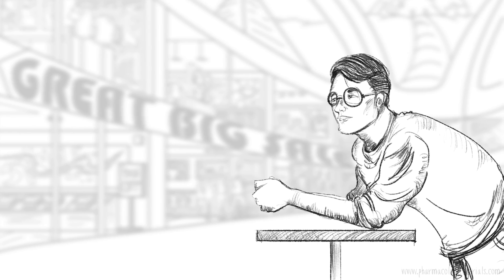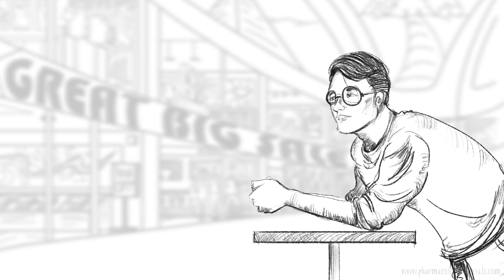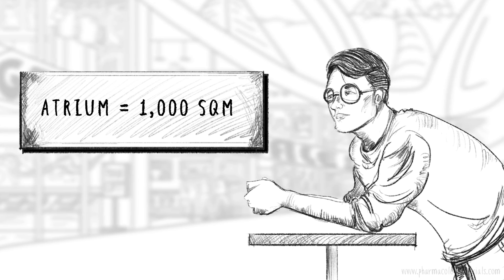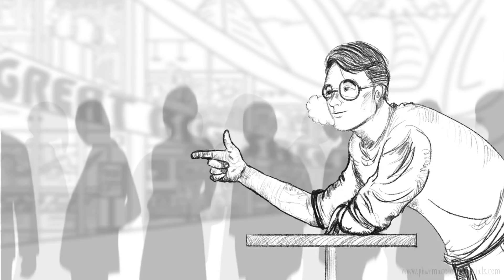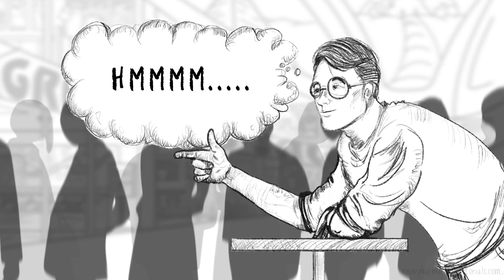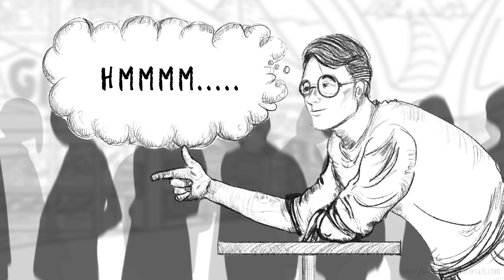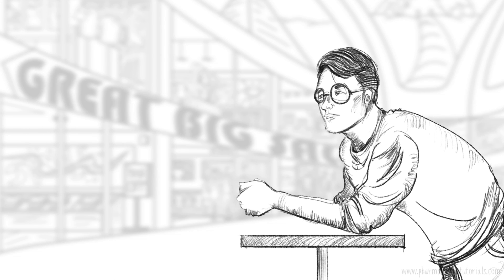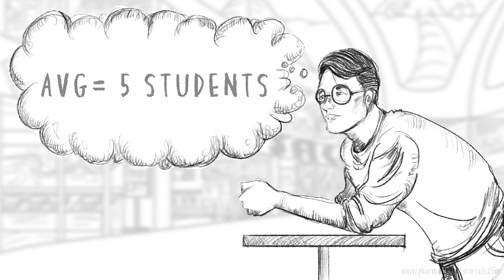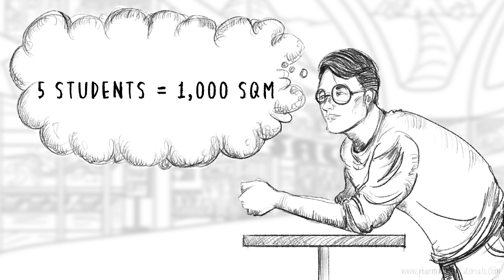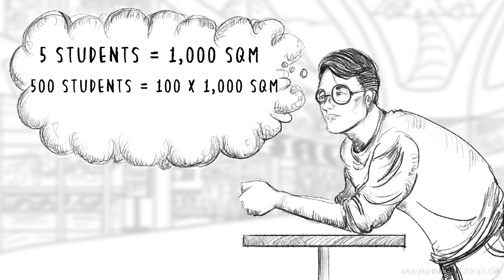Next, he stationed himself in the atrium of the mall, which he could easily measure to be about 1,000 square meters. He then made a simple head count of the students he could see. He observed an average of about 5 students in the atrium. Since the atrium is 1,000 square meters, he reasoned that 500 students would be accommodated in approximately 100 times 1,000 square meters — estimating the mall to be approximately 100,000 square meters.